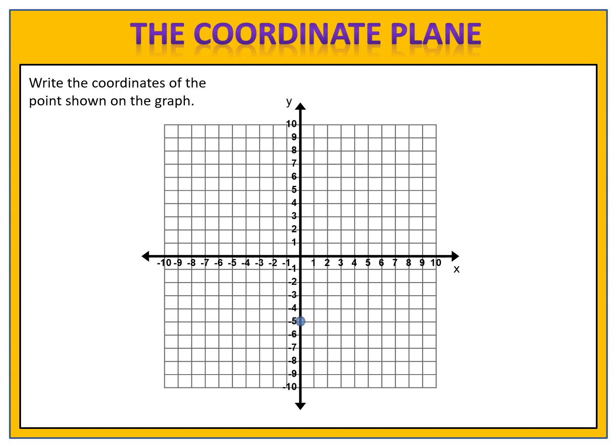Here's one for you to try. Can you write the coordinates of this point? Please pause the video and give it a try. We first look at the x-axis and see that our x value is 0. We then look at the y and see that we're at negative 5. X is 0, y is negative 5, so we have 0 comma negative 5.